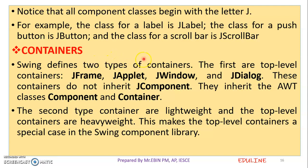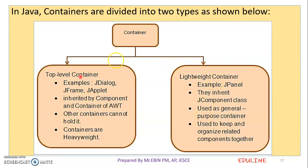Next are containers. The main types of containers are: first, Top-Level Containers, which can be JFrame, JApplet, JWindow, and JDialog. Then we have Lightweight Containers. Top-level containers such as JDialog, JFrame, and JApplet are inherited from the component and container classes of AWT — the Abstract Window Toolkit.